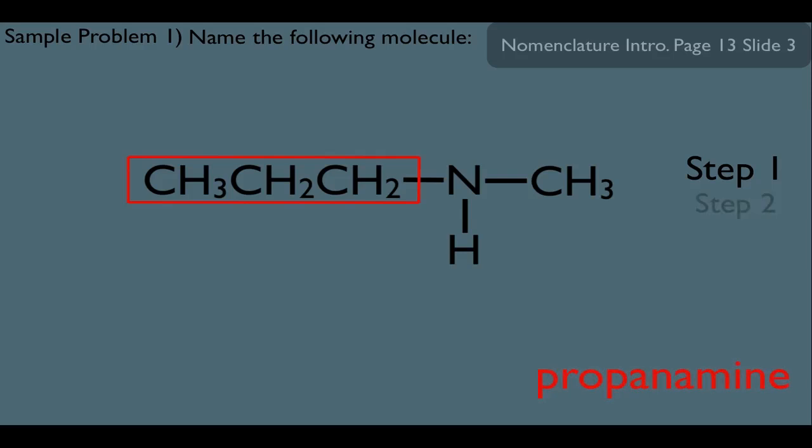That brings us to step two here. We want to get the correct numbering here. And of course, in this case, we'd want to number from right to left so that the nitrogen could be on the lowest number carbon here. In this case, carbon one.